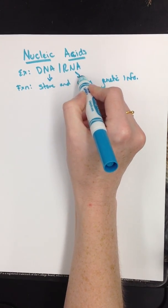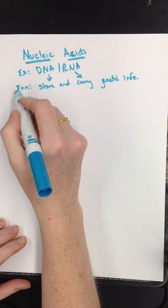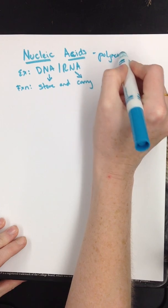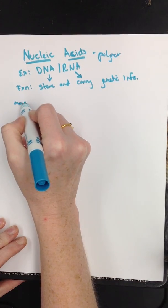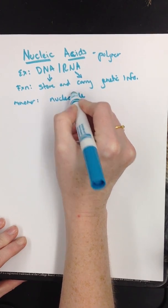The function of a nucleic acid is to store and carry my genetic information. This is why we have two parts to this function, because we have two nucleic acids. My DNA stores my information, and then my RNA is going to be able to carry it. Nucleic acids, remember, this is a really big molecule, so this is a polymer. And so my monomer of a nucleic acid is a nucleotide.